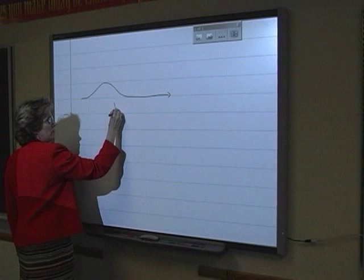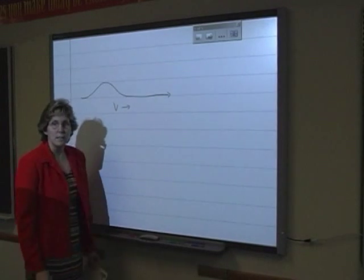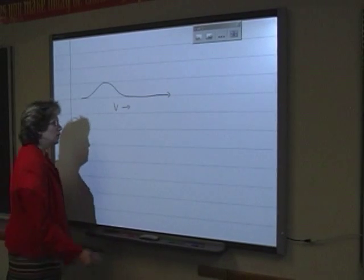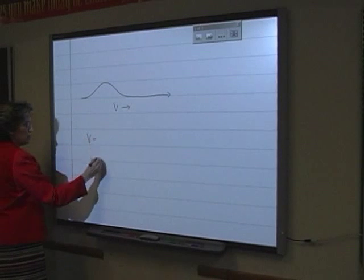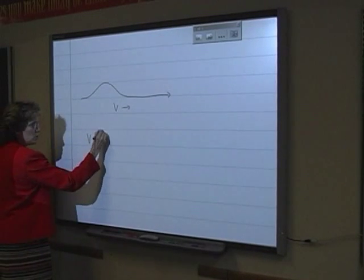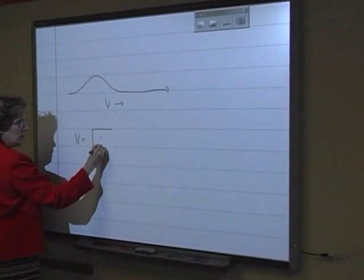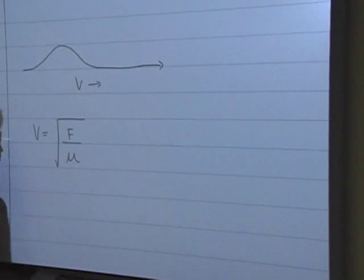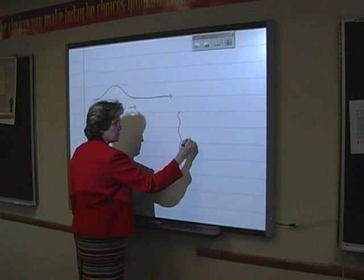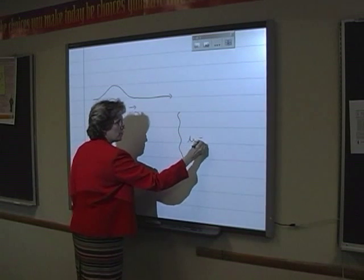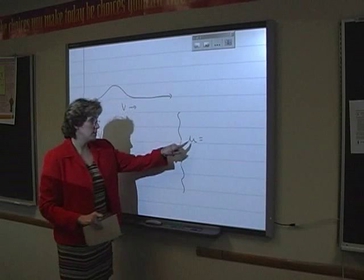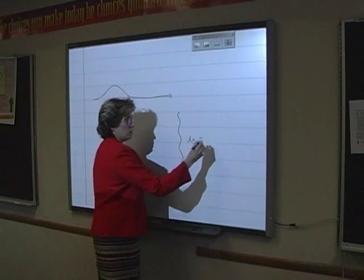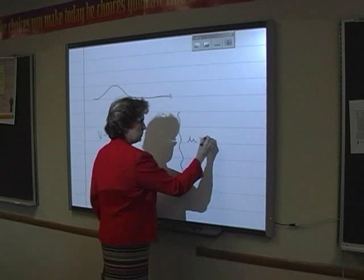So we're looking for the velocity of this pulse as it moves along a string. The formula for velocity is equal to the square root of the force over the mass-to-length ratio. We need to know the mass-to-length ratio. We read this as mu, the Greek letter mu, and that's equal to the mass-to-length ratio.